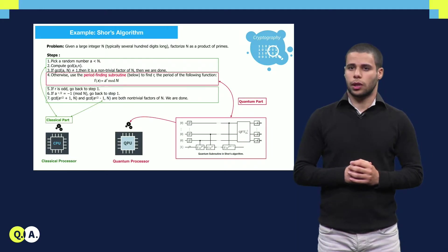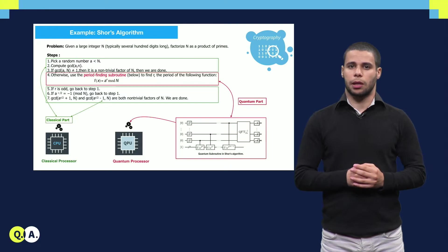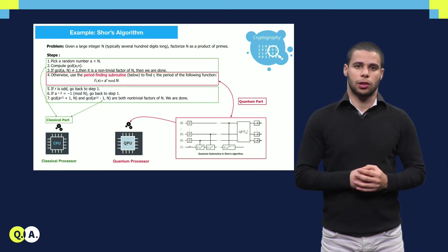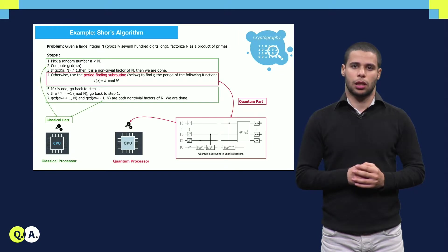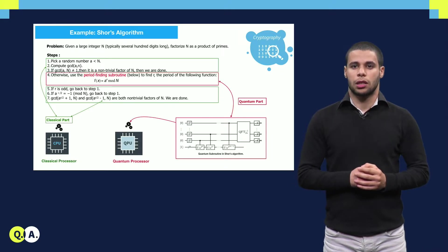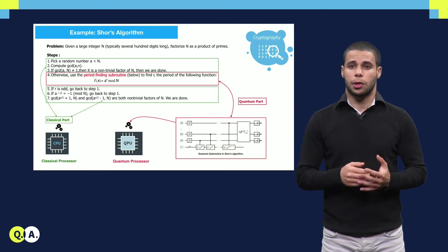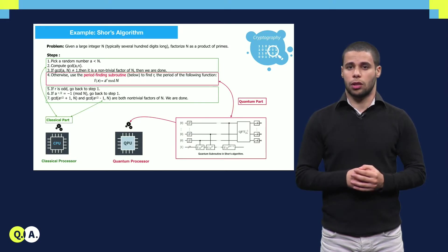For instance, Shor's algorithm is a famous quantum cryptography application for prime number factoring. This algorithm includes classical computation such as the greatest common divisor computation which can be executed efficiently in a traditional processor, and the quantum part such as the quantum Fourier transform or the QFT which should be executed on a quantum processor and operate on the qubits.